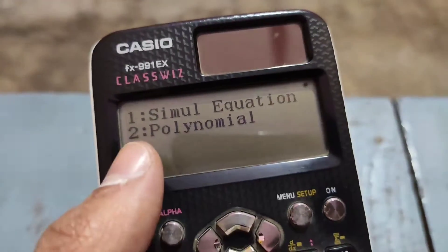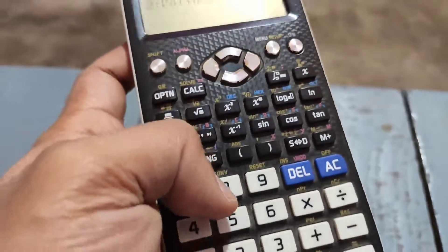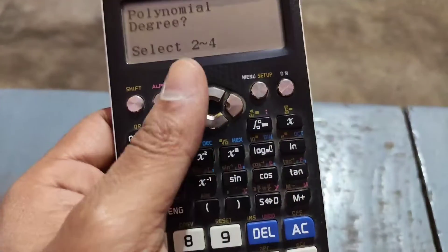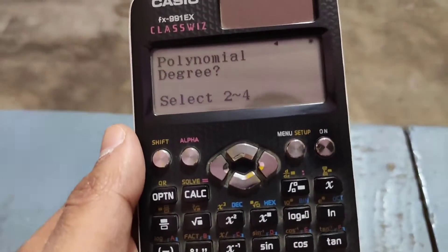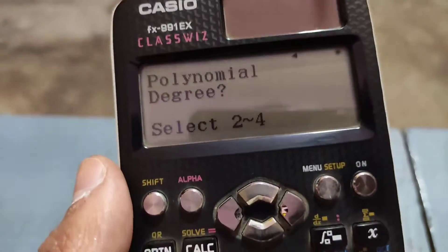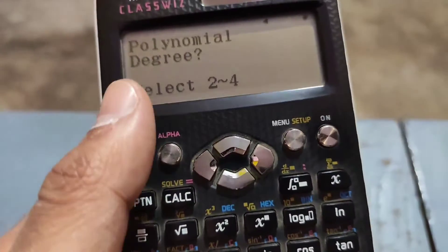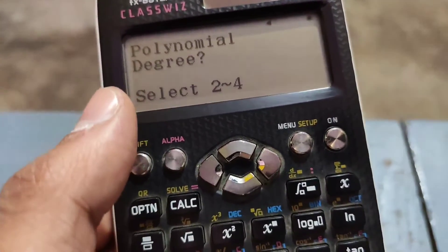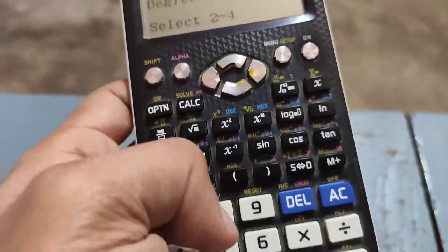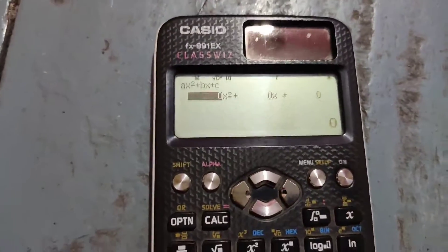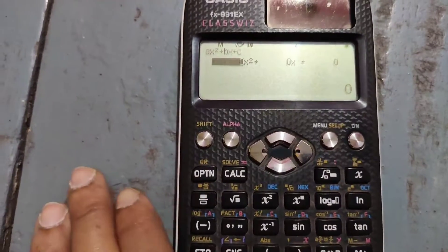We press 2 for polynomial, and now it is asking the degree. A quadratic equation has degree 2 (Ax² + Bx + C). The power of the x² term is 2, so we press 2, and now it has the format of the quadratic equation.